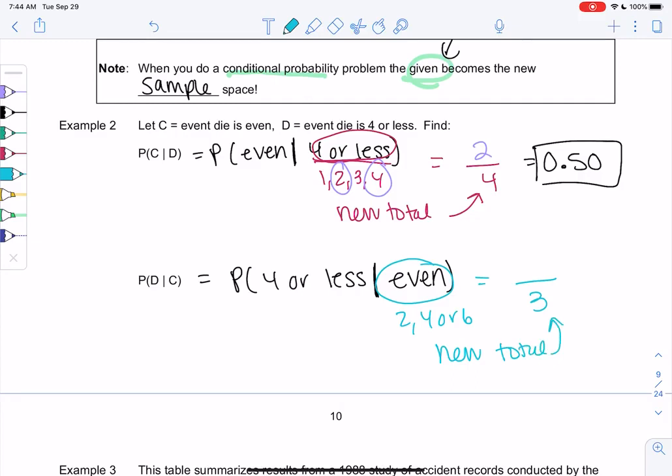And then how many of those are 4 or less? 2 and 4, right? 6 is not 4 or less, so 2 out of 3. So we do get a different result. So order does matter.